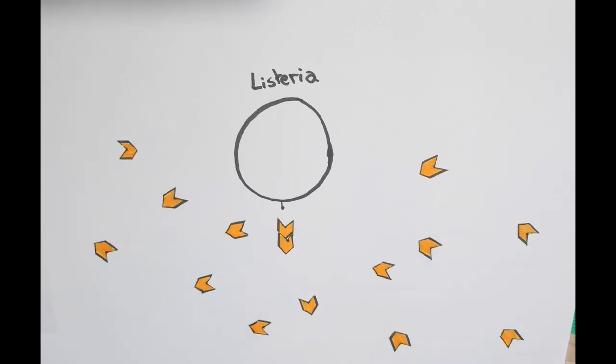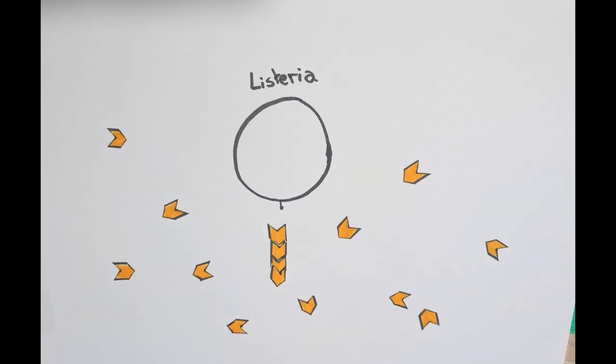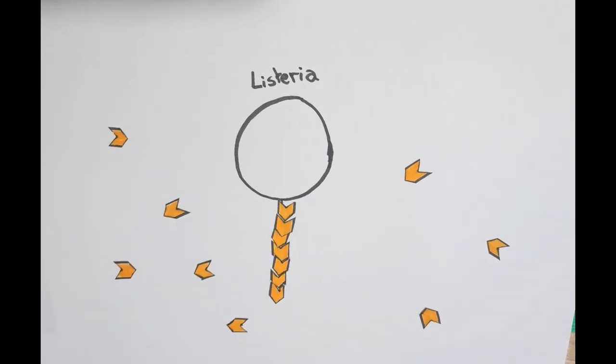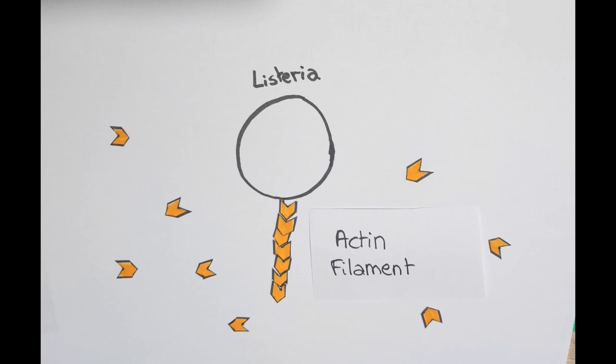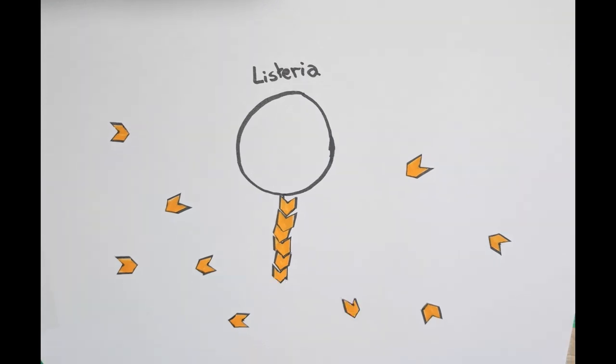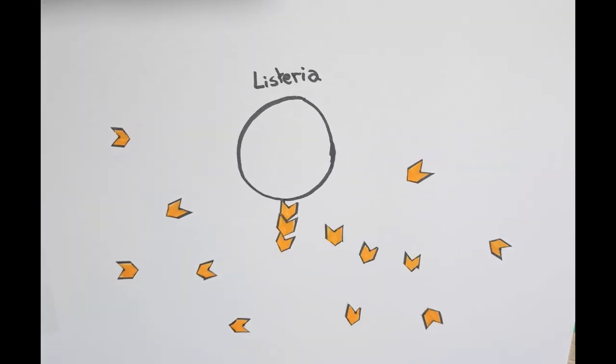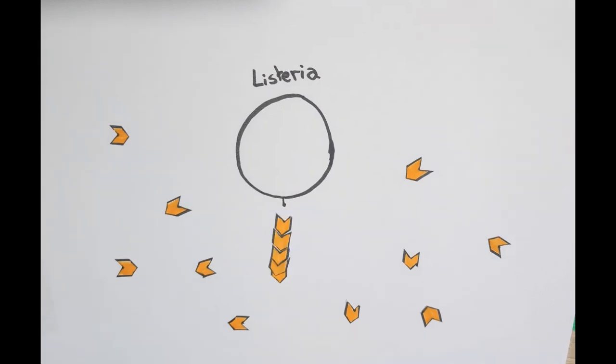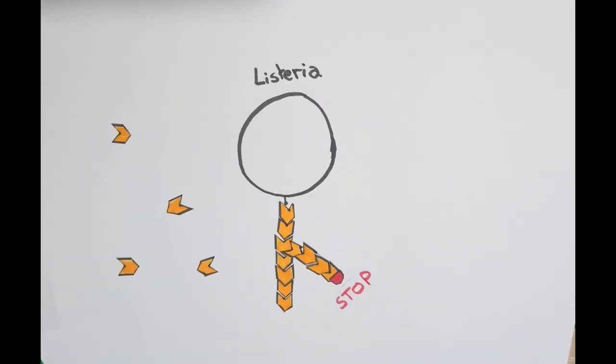It is called polymerization. By multiple monomers' addition, an actin filament is formed. This filament can depolymerize, losing monomers at the end, polymerize, branch and cap, stopping its growth.